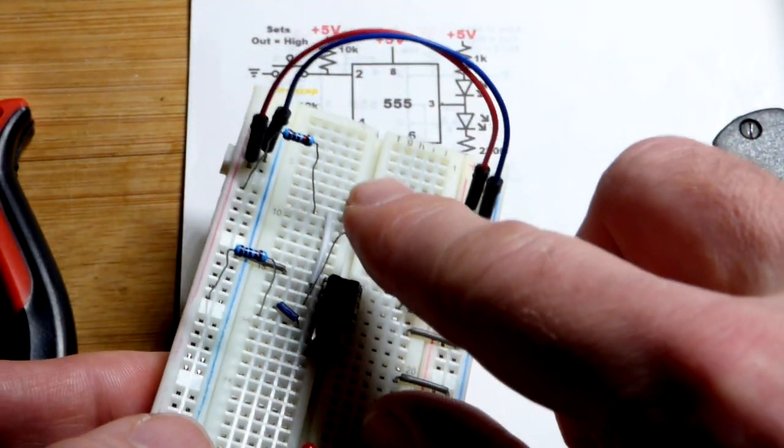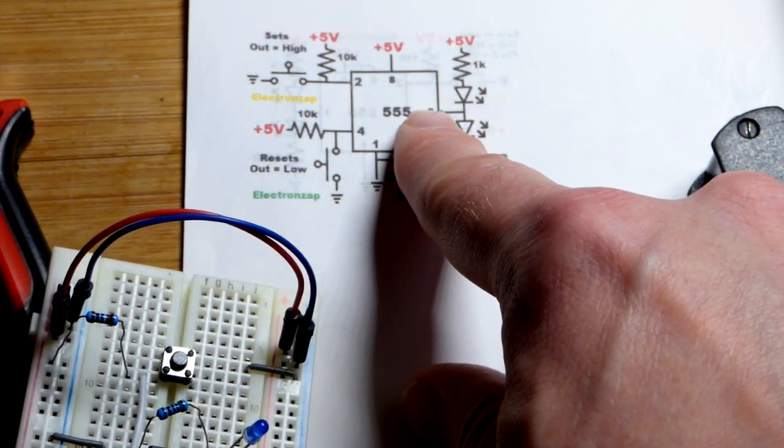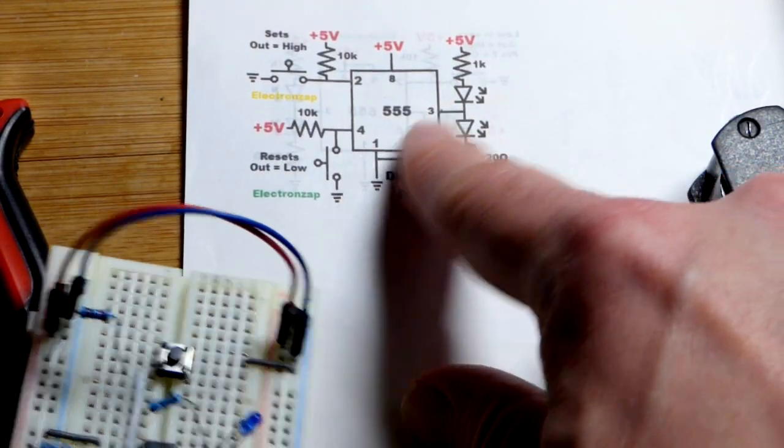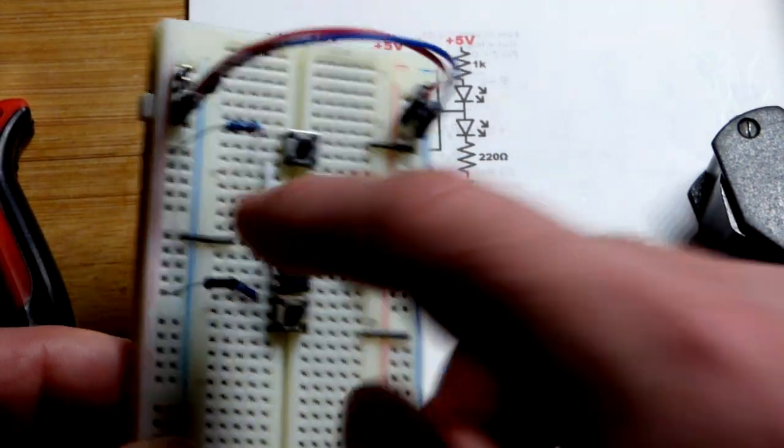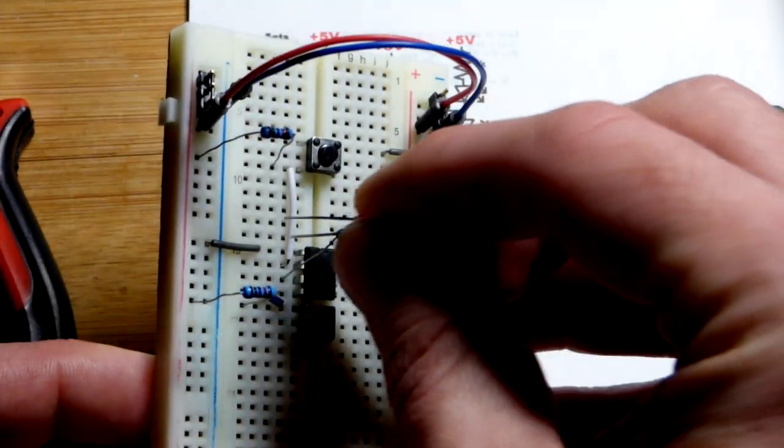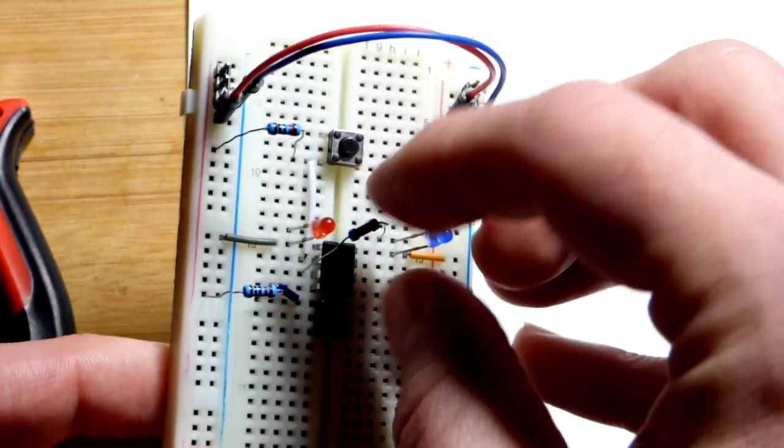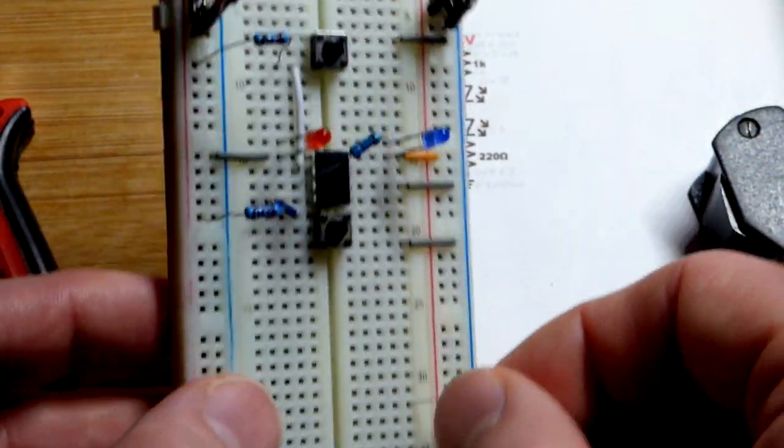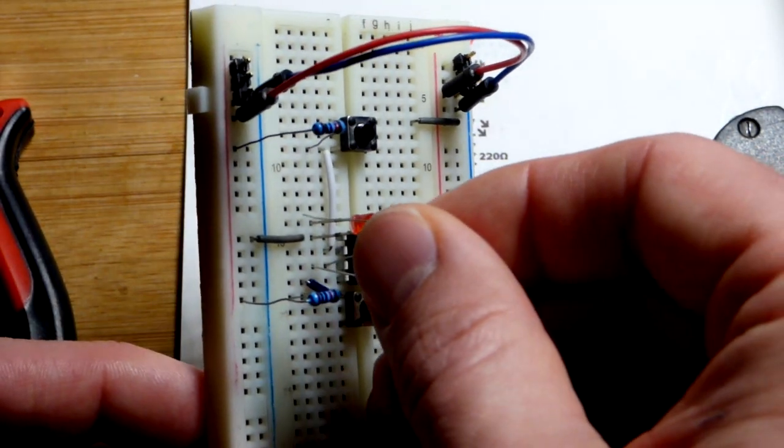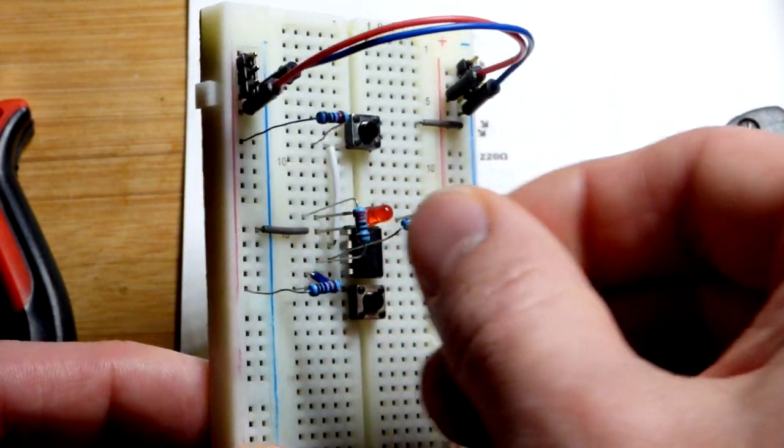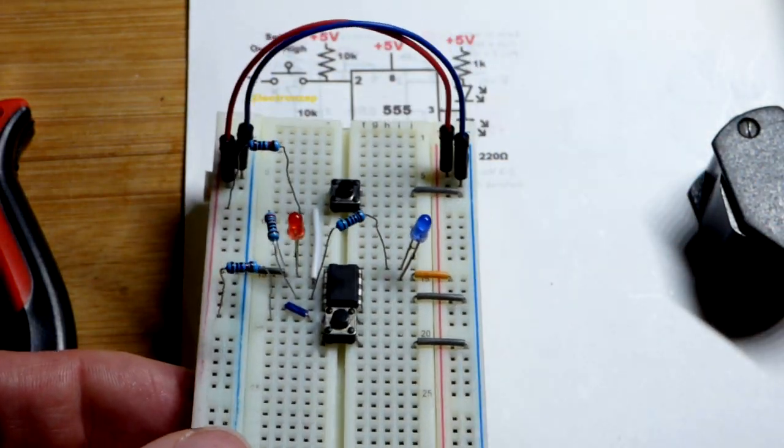For the red LED, going to put the short lead, the cathode, to the negative supply - ground. That's the shorter lead going there. Longer lead, anode, is going up one spot. Then 220 ohm resistor. Red LEDs aren't as bright as blue LEDs. As I said before, we're losing some of the voltage at the output for the high output. I got the red LED to light up when the output is high, connected to the positive supply as good as it can do. Pretty simple, pretty straightforward.